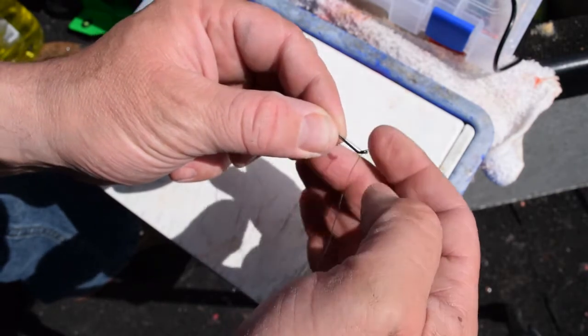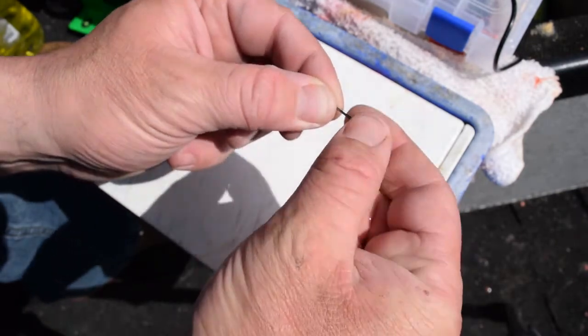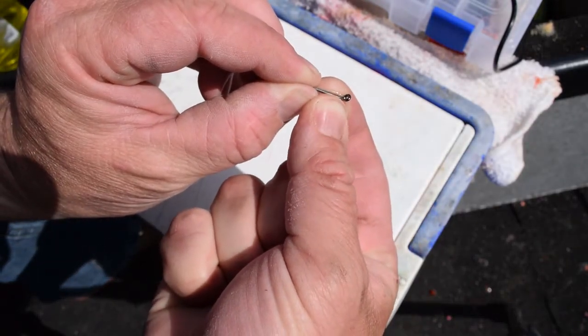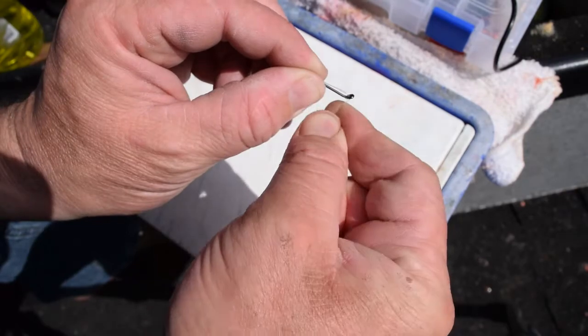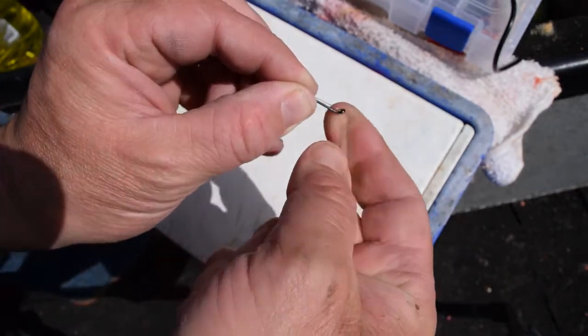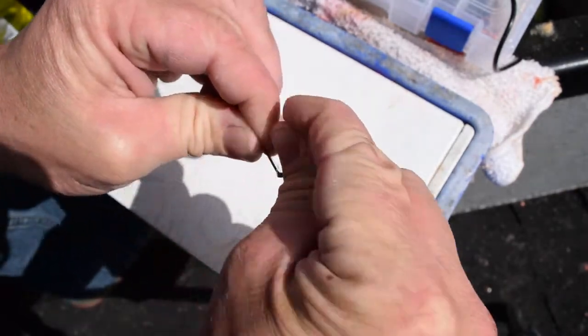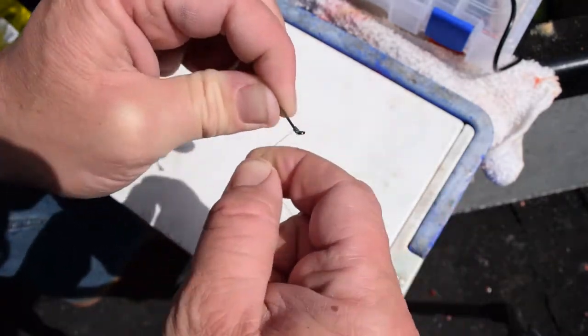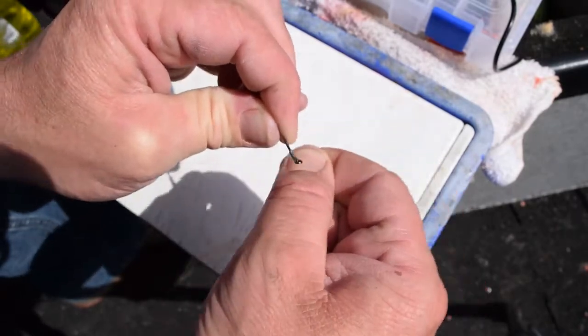You want to pull that tight and slide it to the groove where the shank and the eye connect, right there. And then you're going to wrap your line around that and wrap it about 20 times.